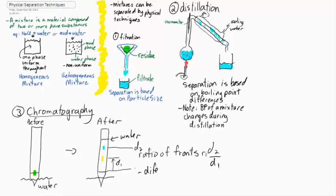We often compare them by dividing them, and this is called the ratio of fronts. The difference in the tendency to move with the solvent is the physical property we use to separate them. Thanks very much.